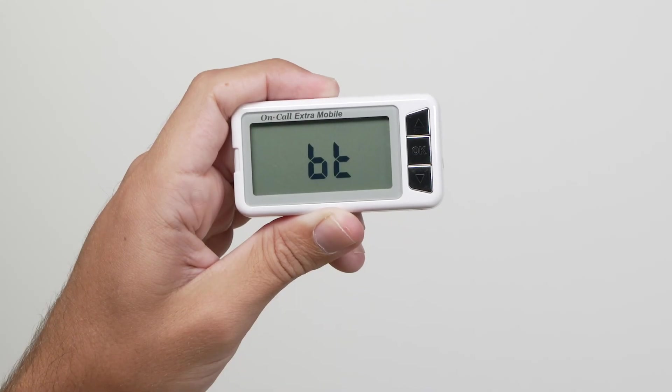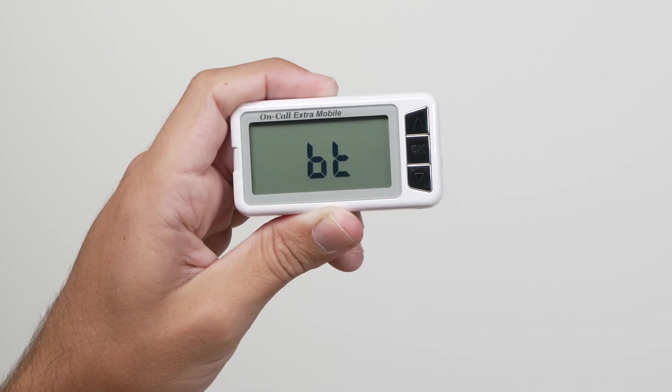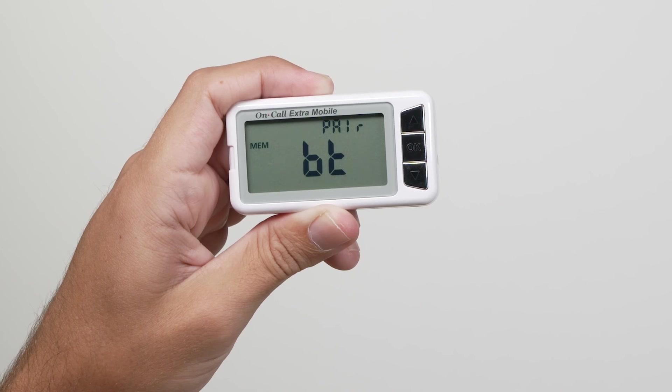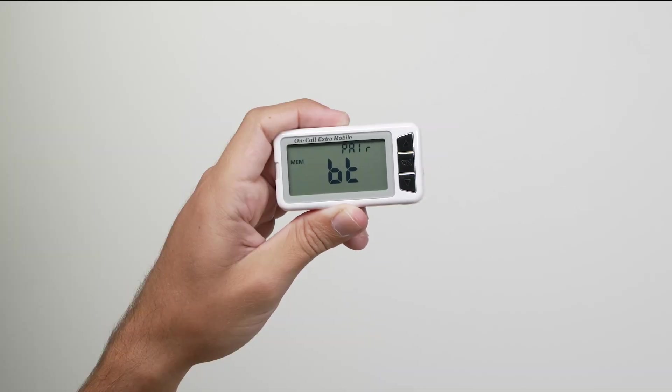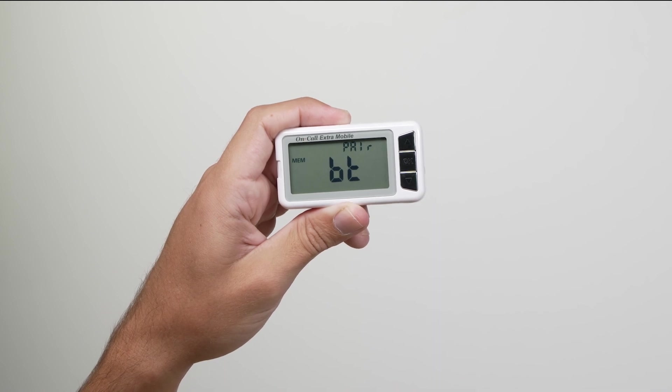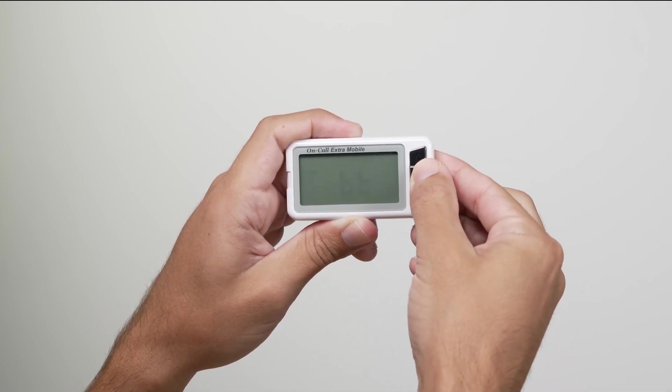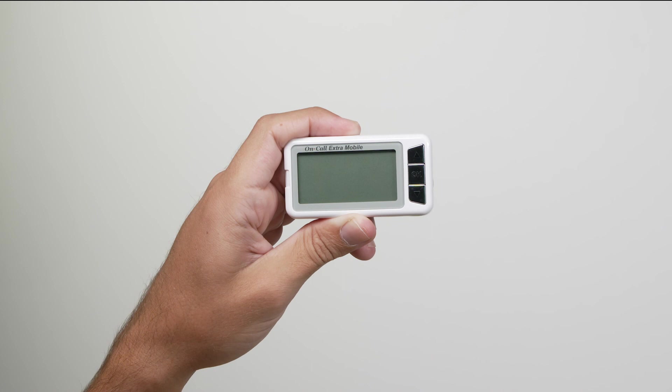Once the pairing is completed successfully, the word pair stops blinking and the MEM symbol displays to show that the device is paired and stored in the meter's memory. Press the OK button to exit the setup or the meter will automatically shut off after 30 seconds of inactivity.